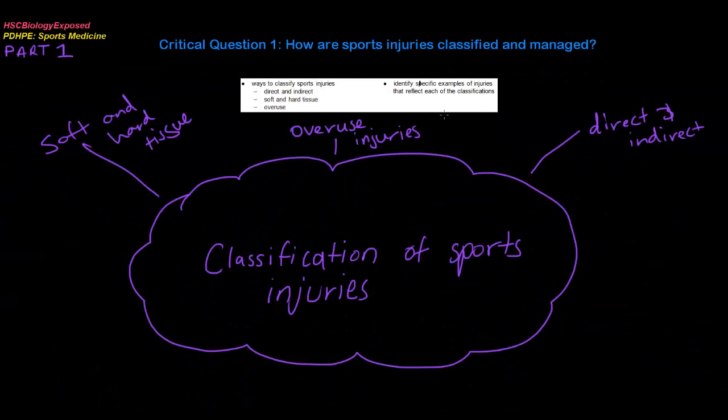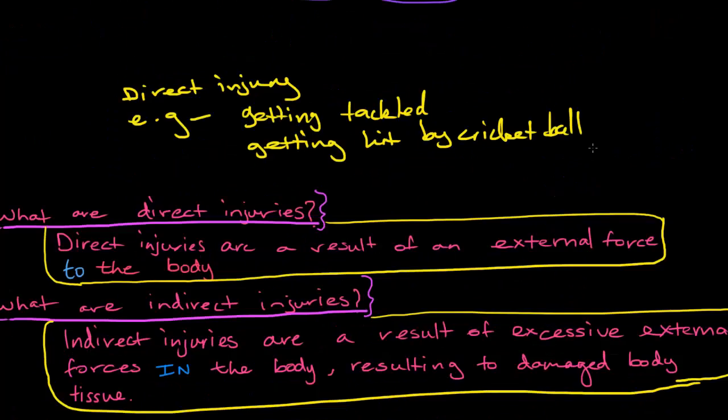Now, we have a few ways to classify sports injuries: direct and indirect, soft and hard tissue, as well as overuse. Direct and indirect could be describing an injury that is either soft or hard tissue, and overuse is a completely different category. I don't want you to look at these classifications as isolated — in some way or another they can be linked together. Just know the general definitions and try to make links between how these injuries are classified.